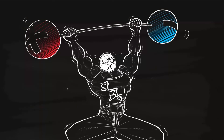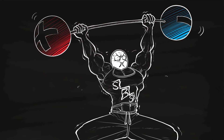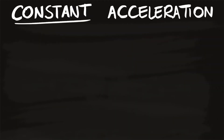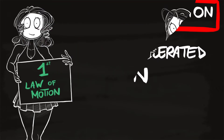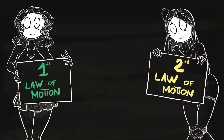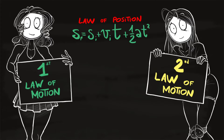Whether you're training for a competitive physics test or just studying, you will almost only encounter constant acceleration motions. Speed changes, but it always changes at the same rate. Acceleration always has the same value in these cases, which is why this is called uniformly accelerated motion.